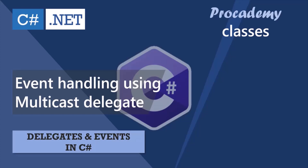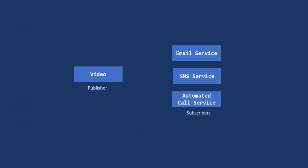So what actually is this Publish-Subscribe Design Pattern? In a Publish-Subscribe Design Pattern, we have a Publisher and we have some Subscribers. In this example, the Video class is the Publisher, and these classes — the Email Service class, SMS Service class, and Automated Call Service class — these three classes are the Subscribers.